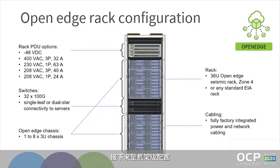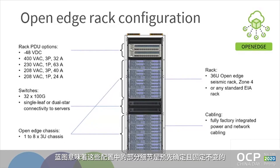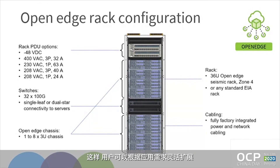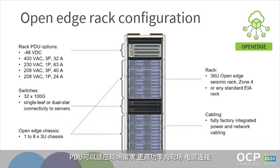Next is the rack level configuration. This picture is actually showing a rack level blueprint. The blueprint means that part of the details in these configurations are predetermined and fixed — like the location of the hardware units and the networking connectivity. But still the user can define the number of chassis and the number of switches or PDUs in the system, giving the possibility to scale to the needs of the application. On top of the rack there are the PDUs, which are the means to adapt to the higher power or site power connection and also distribute the power feed within the rack.